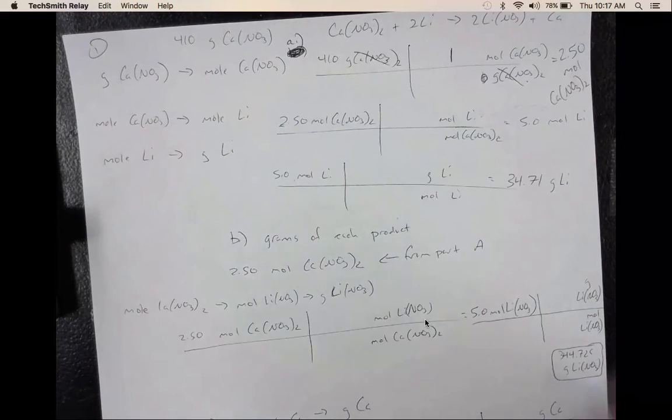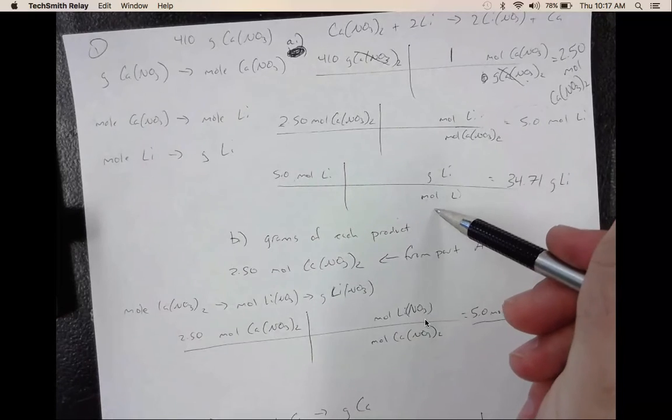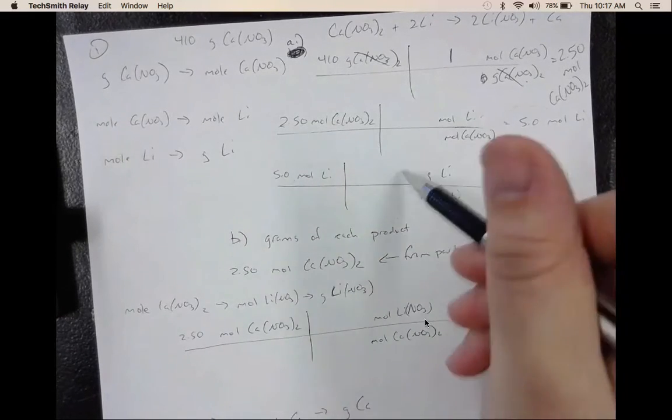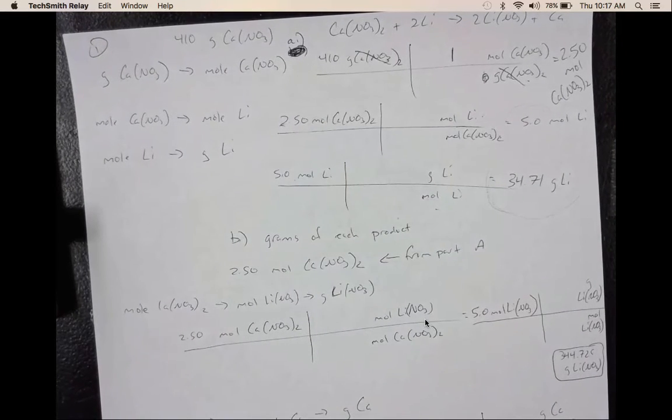Remember guys, whenever you have grams, you always have 1 mole. And that's because when you look at the periodic table, it's always the mass of 1 mole. When you plug in your values and solve, you should get 34.71 grams of lithium.